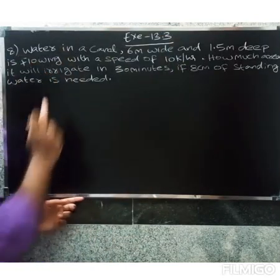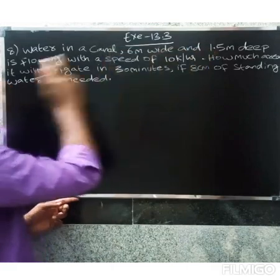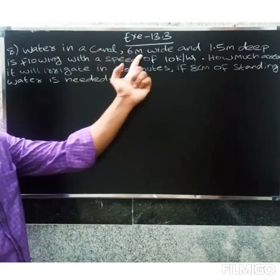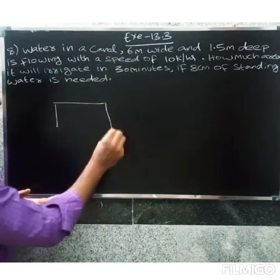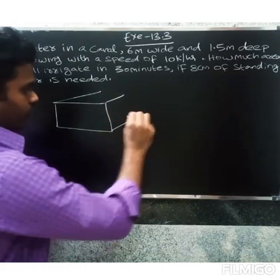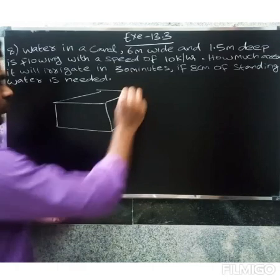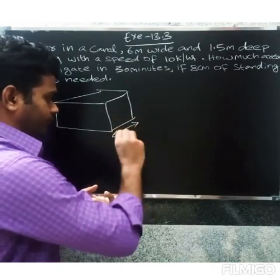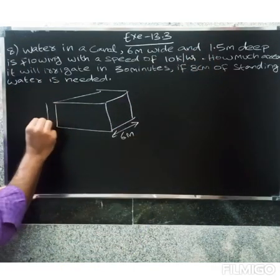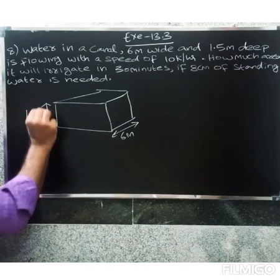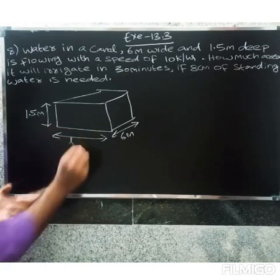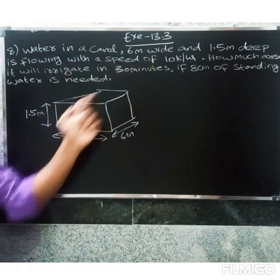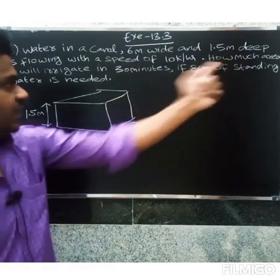This is question 13.3, layer 8. Water in a canal 6 meters wide and 1.5 meters deep is flowing at a speed of 10 kilometers per hour. How much area will it irrigate in 30 minutes?